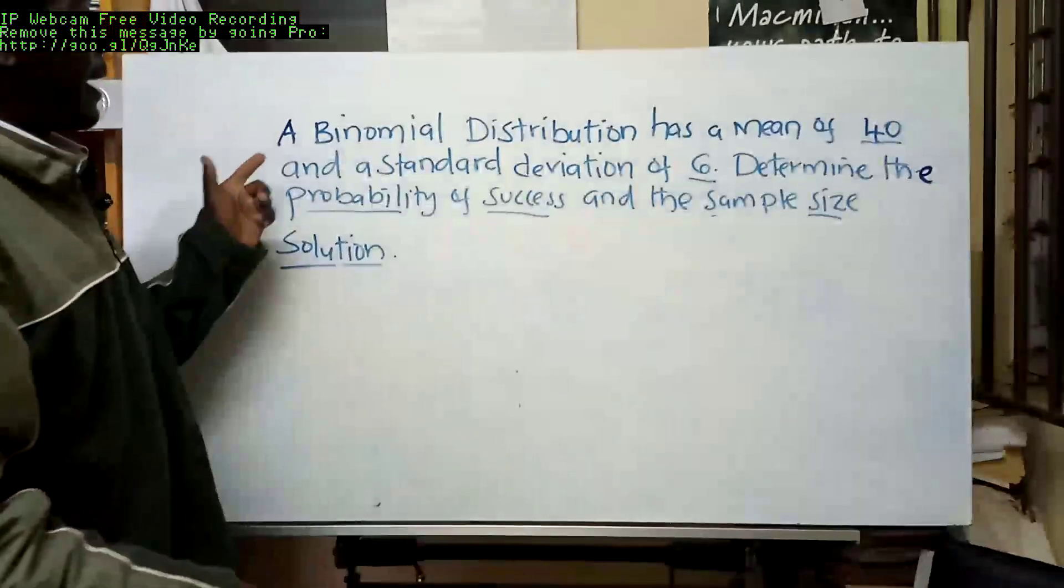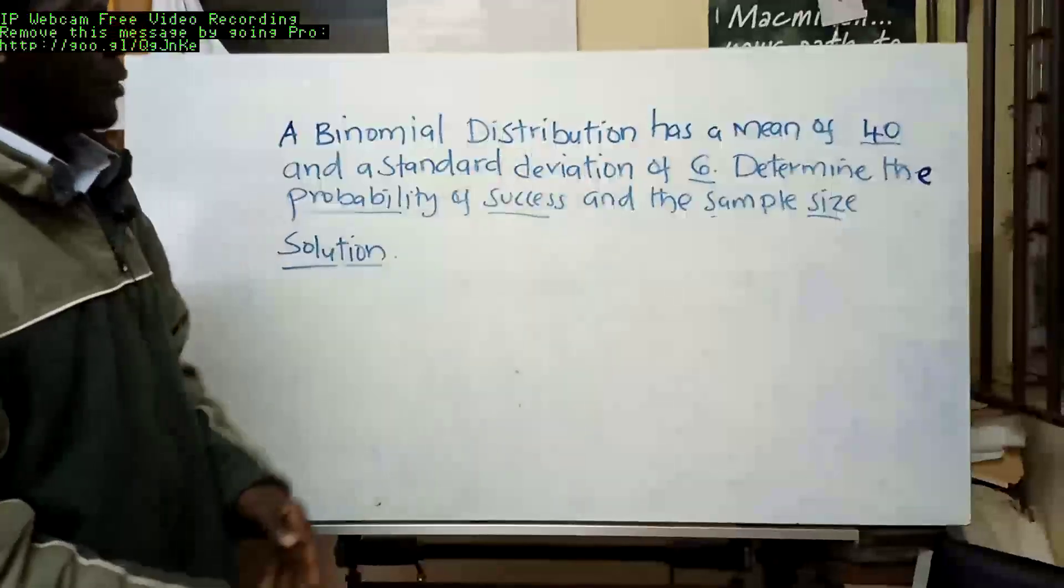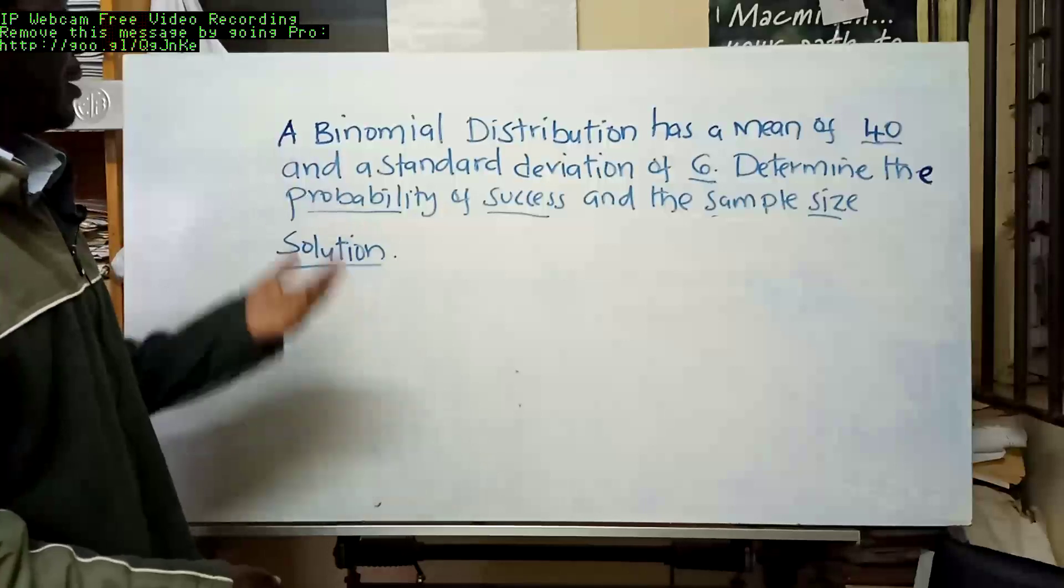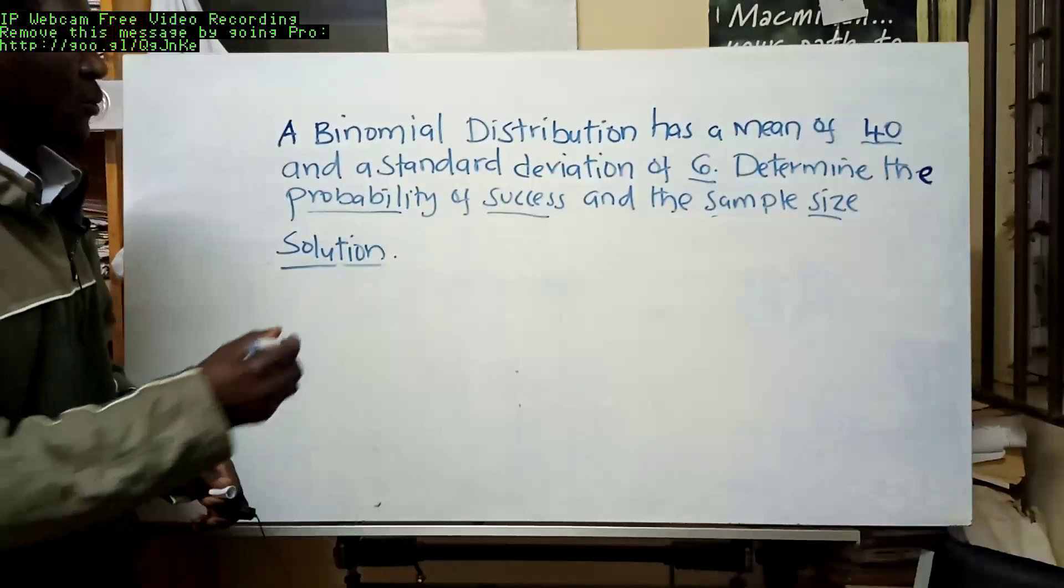We have a binomial distribution which has a mean of 40 and a standard deviation of 6. We're supposed to determine the probability of success and the sample size. I think this one is a very simple question we can do quickly.